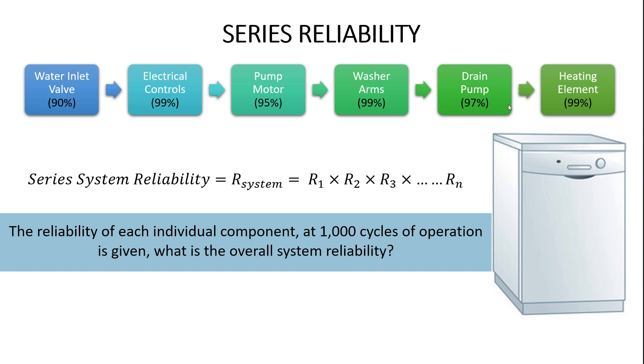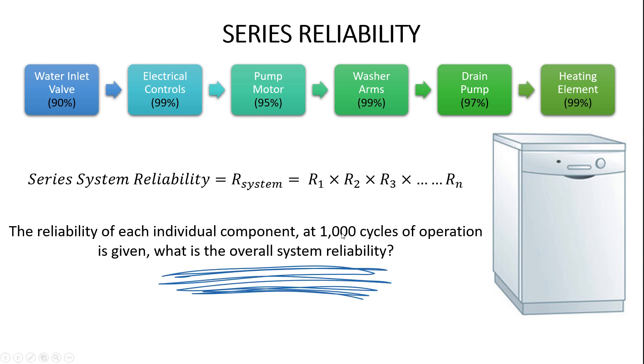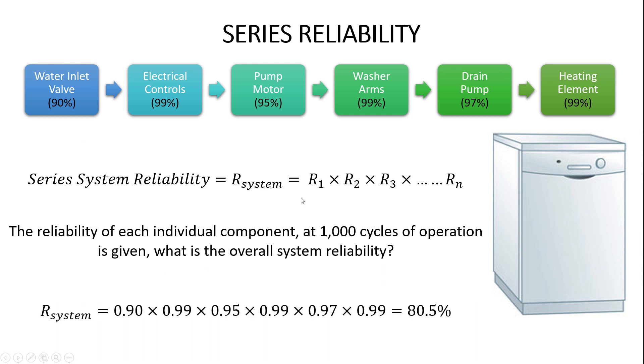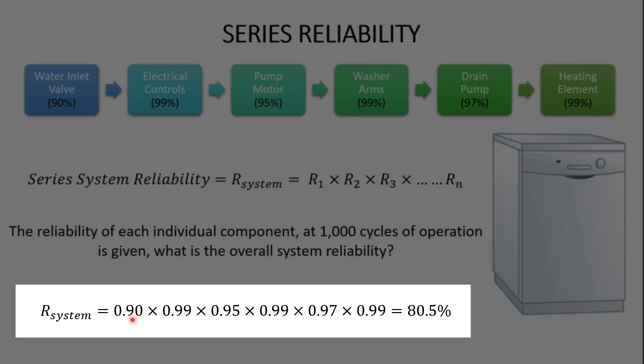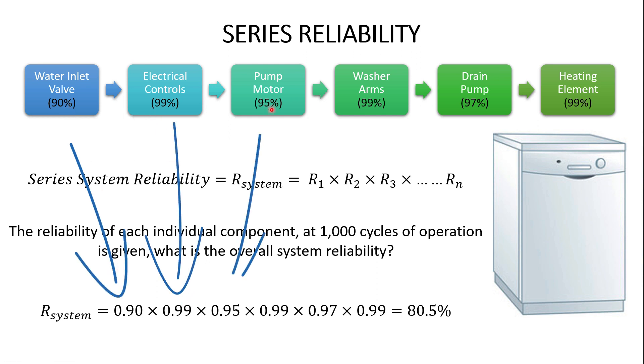And let's say that we know that the reliability of these individual components at 1000 cycles is measured. So the water inlet valve is 90% reliable, the electrical controls are 99% reliable, our pump motor has 95% reliability, and we've measured the reliability at 1000 cycles. What is the overall system reliability after 1000 cycles of the dishwasher? So here we can just simply plug those reliabilities into that equation 90% times 99% times 95 times 99 times 97. And you can see I'm just pulling these individual reliabilities down from those sub components into the equation to come up with an overall system reliability of 80%.